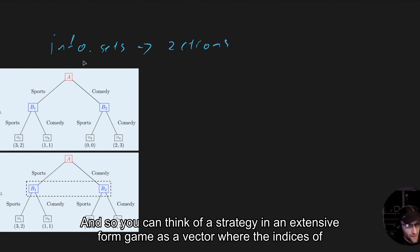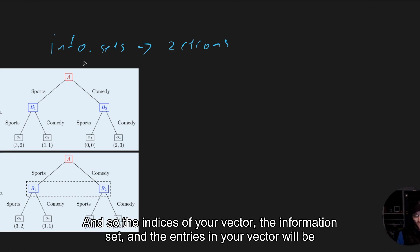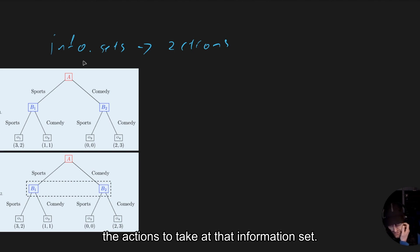So you can think of a strategy in an extensive form game as a vector where the indices of that vector, what is at each position in that vector, corresponds to an information set. The indices of your vector are the information set, and the entries in your vector will be the actions to take at that information set.